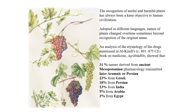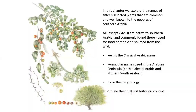This movement of plants meant that many lost their original names — they were simply adapted to a new culture and new peoples. An analysis of the etymology of plant names by Al-Biruni, who was a physician, noted that 31% had the same ancient Mesopotamian link in their names, with later ones from Greek, Persian, Indian, basic Arabian Peninsula, and some from Egypt. In this chapter, I explore the names of only 15 plants, tracing them back through classical Arabic names used in the Arabian Peninsula to their origins.